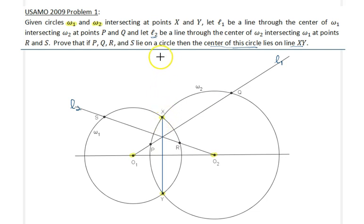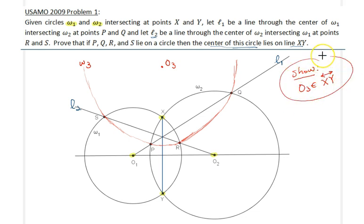Obviously on this line extended somewhere here. So we are told that P, Q, R, S are concyclic, so we have a circle like that. That's our circle. It is obvious that the center of that circle will be somewhere here. Let's call it center O3, and that would be circle omega 3. Now, obviously, the question is asking to show that O3 lies on the line XY. That's exactly what we want to show.